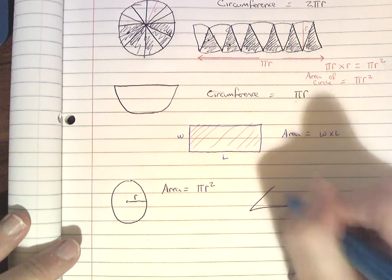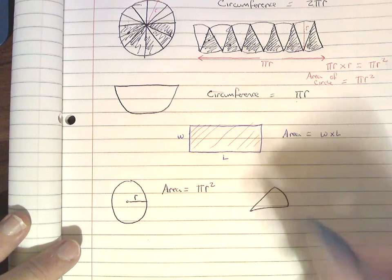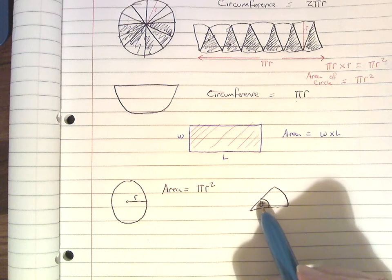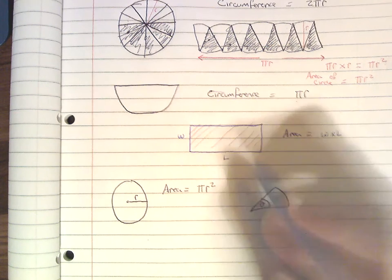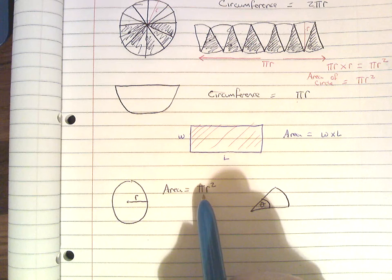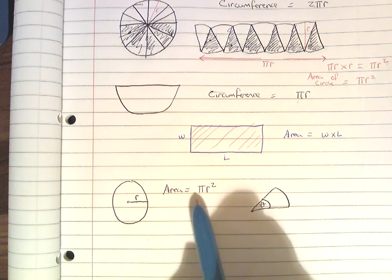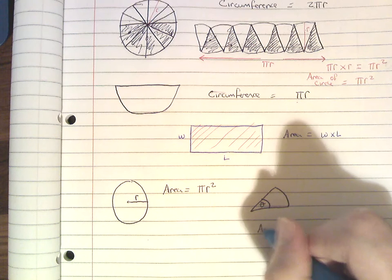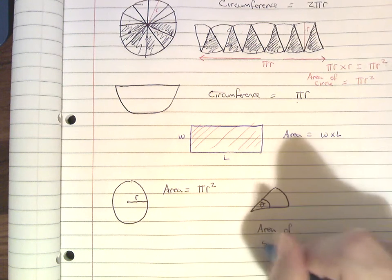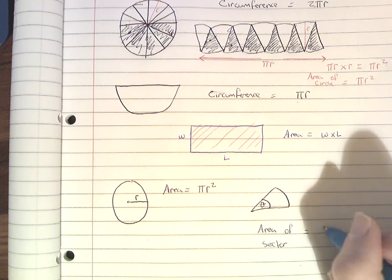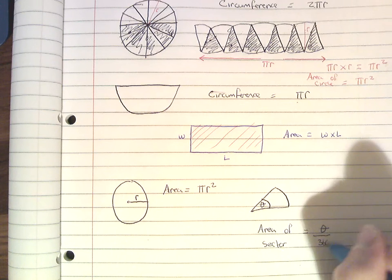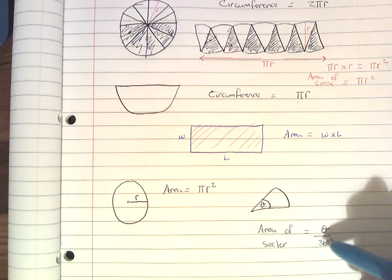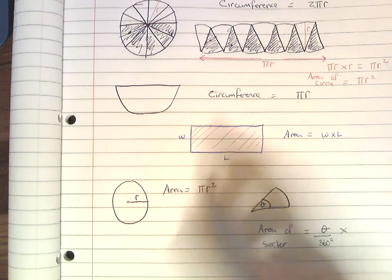So imagine I have a sector — just a piece of this circle. It'll have this symbol here, which represents the angle. The area of a sector is going to be equal to the angle divided by 360 — since 360 represents the whole circle, but we're only interested in the degrees we've taken out — so it's theta over 360, which is a fraction, multiplied by pi r squared.